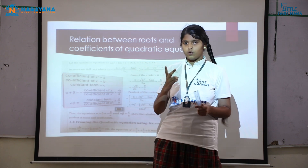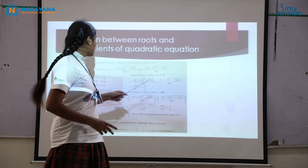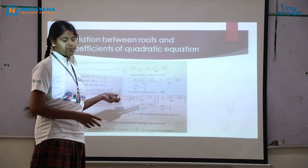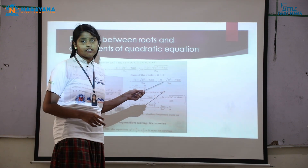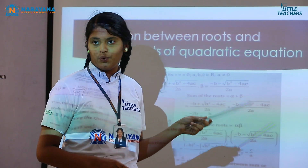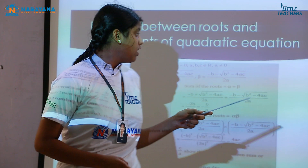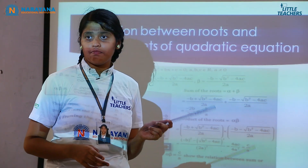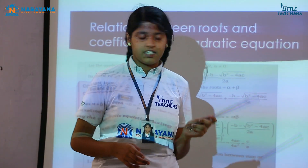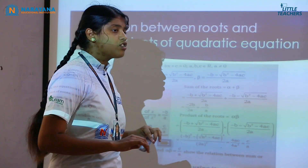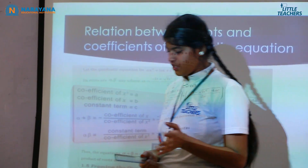Let me denote the two roots as alpha and beta. Alpha equals (−B + √(B² − 4ac)) / 2a and beta equals (−B − √(B² − 4ac)) / 2a. Now let me find first the sum of the roots, and next the product of the roots.